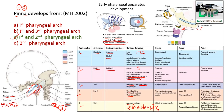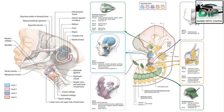So pharyngeal arc six gives rise to arytenoid cartilage. This picture nicely shows Meckel's cartilage at the base of the mandible from the first pharyngeal arc. The hyoid bone's upper body or lesser cornu develops from the second pharyngeal arc, and the lower body or greater cornu from the third. The thyroid cartilage with corniculate cartilage develops from the fourth pharyngeal arc, and arytenoid cartilage from the sixth pharyngeal arc.